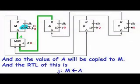And so, the value of A will be copied to M and the RTL of this is if J, A will be copied to M.